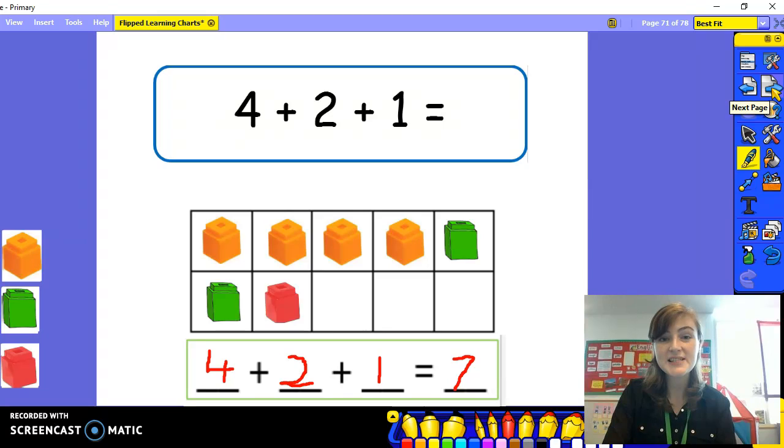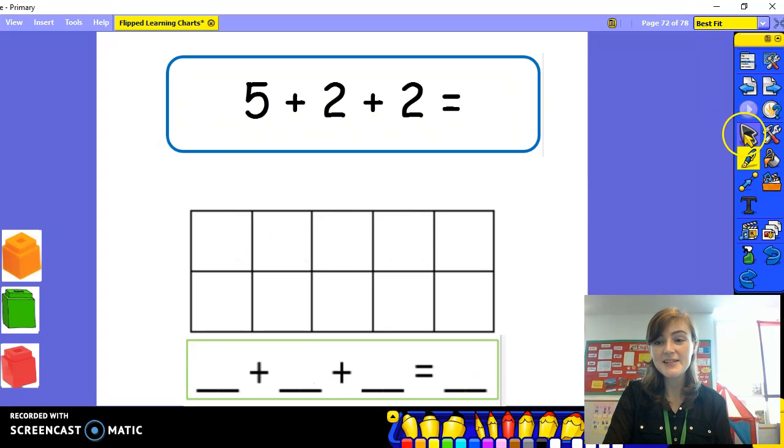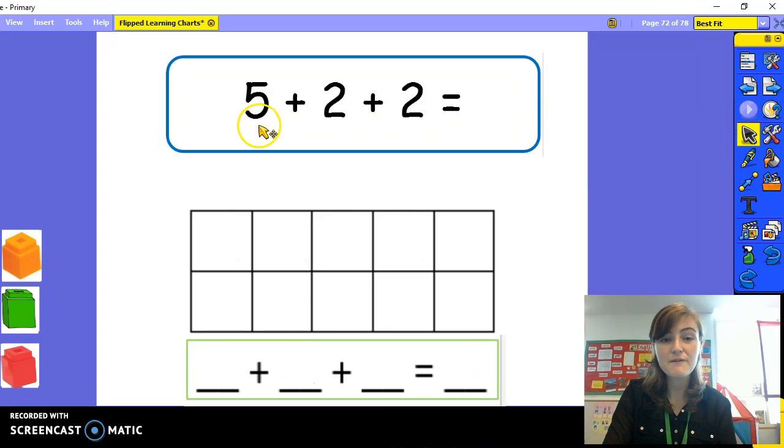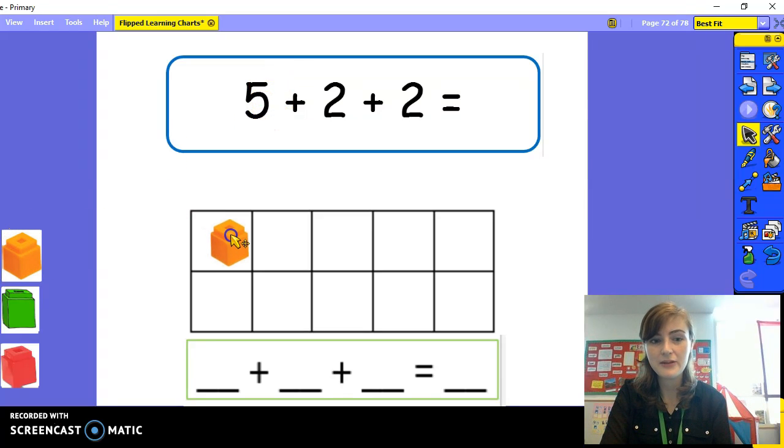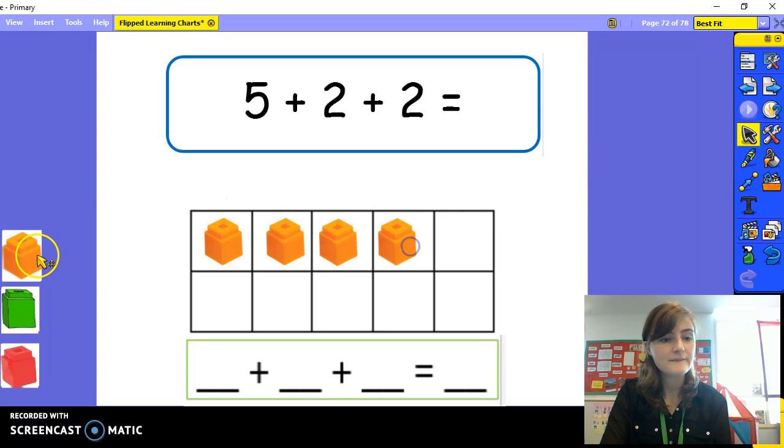Let's try another one together. This number sentence says five plus two plus two equals. How many orange cubes should I take first? That's right, five. Let's count them out. One, two, three, four, five. Now how many green cubes do I need?